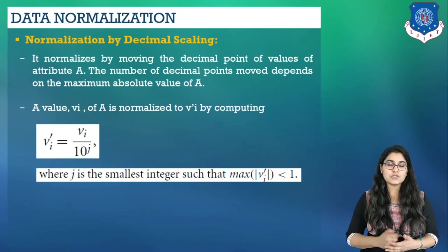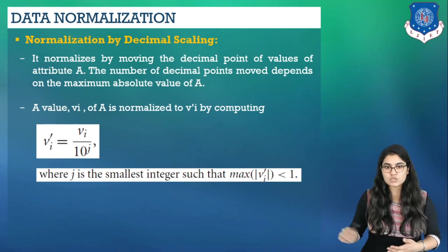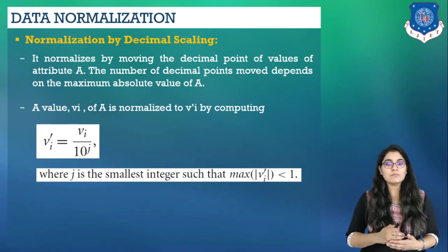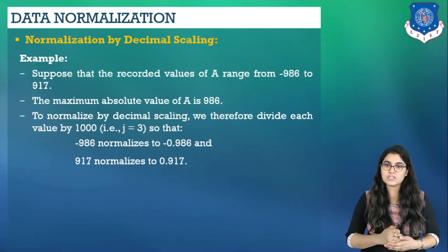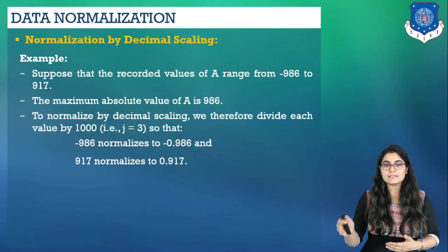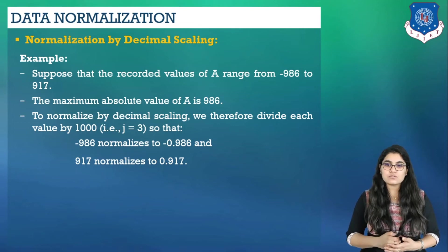Let's discuss the next method: normalization by decimal scaling. It normalizes by moving the decimal point of values of attribute A. The number of decimal places moved depends on the maximum absolute value of A. The formula is VI' = VI / 10^J, where VI is the value to transform and J is the smallest integer such that max(|VI'|) < 1. Suppose the recorded values of attribute A range from -986 to 917. The maximum absolute value is 986, so we divide each value by 1000, taking J = 3. Thus -986 normalizes to -0.986 and 917 normalizes to 0.917.